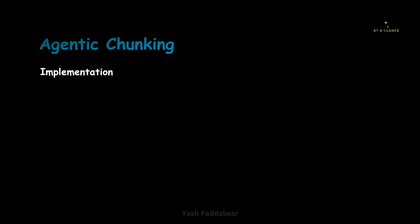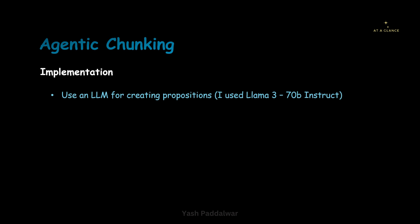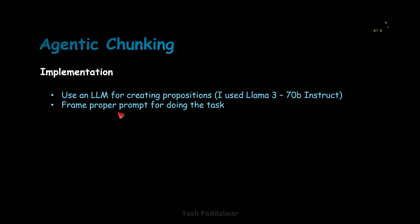For implementing agentic chunking strategy, we require a very important thing — a large language model to create propositions. Here I am specifically using the LLaMA 70 billion instruct model. And obviously, if you are using a large language model, you will have to frame a prompt. This prompt is nothing but a set of instructions that we give to the large language model to perform a particular task. Here the entire game is in the hands of the prompt — the way you write the prompt, the way you will get the results.